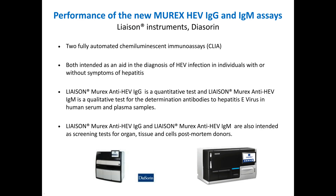Let me now present the performance of the new LIAISON HEV IgG and IgM assays available on the Diasorin instrument, usable on the LIAISON XL or LIAISON XS. These are two fully automated chemiluminescence immunoassays for the diagnosis of hepatitis E with or without symptoms, and also intended to screen organ, tissue, or post-mortem donors. The anti-HEV IgG assay is quantitative, with results given in international units per ml, while the anti-HEV IgM assay is qualitative. Both can be used on plasma and serum samples.